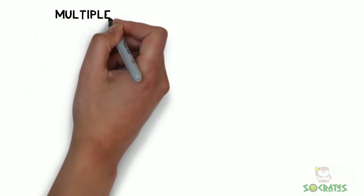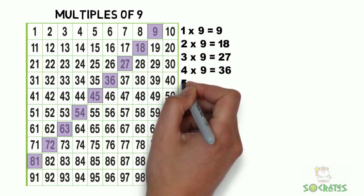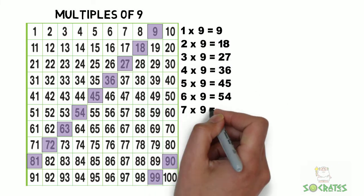And lastly, multiples of nine. Look at that pattern that they make on the hundreds chart, increasing nine by nine each time.